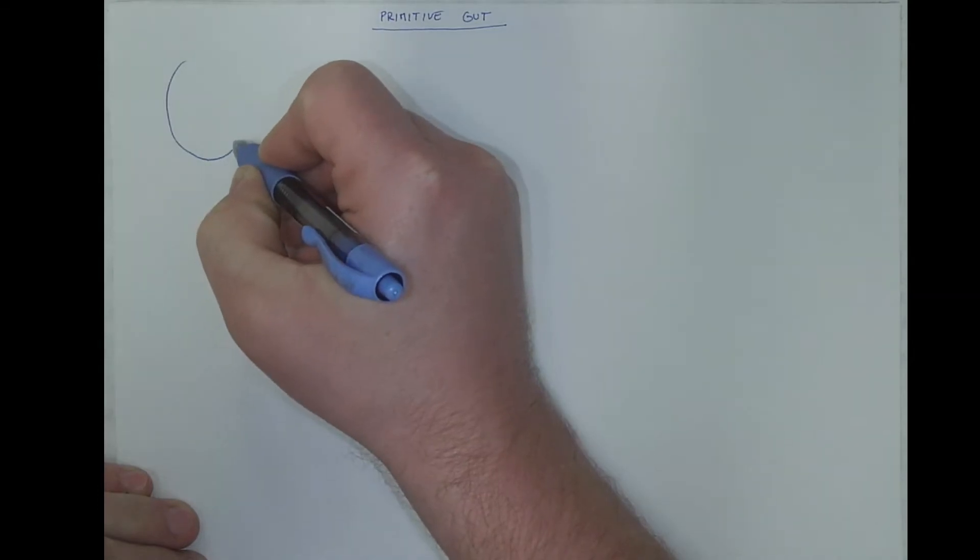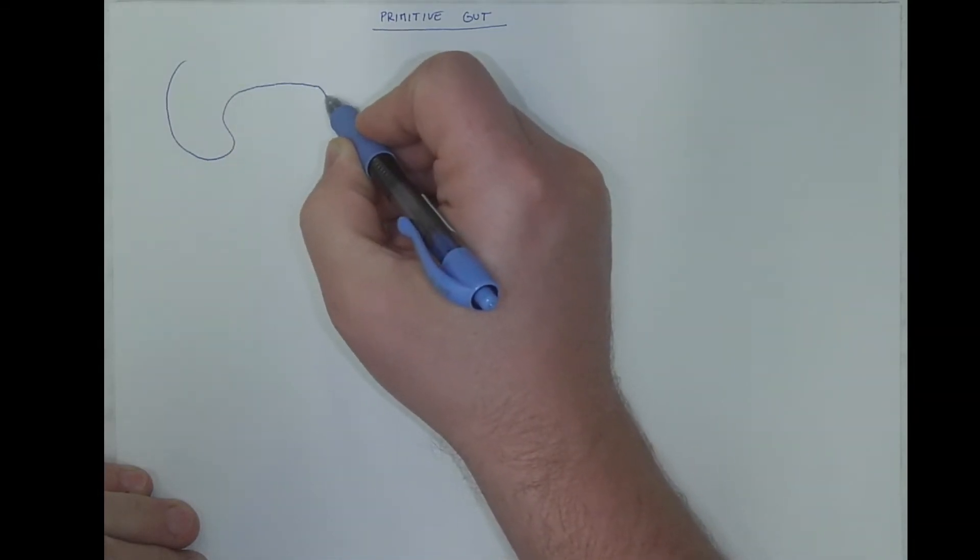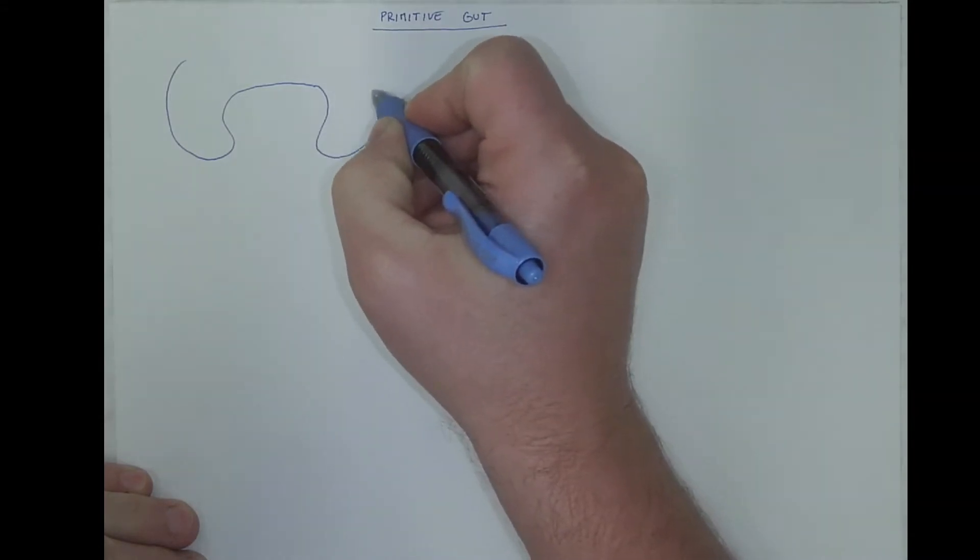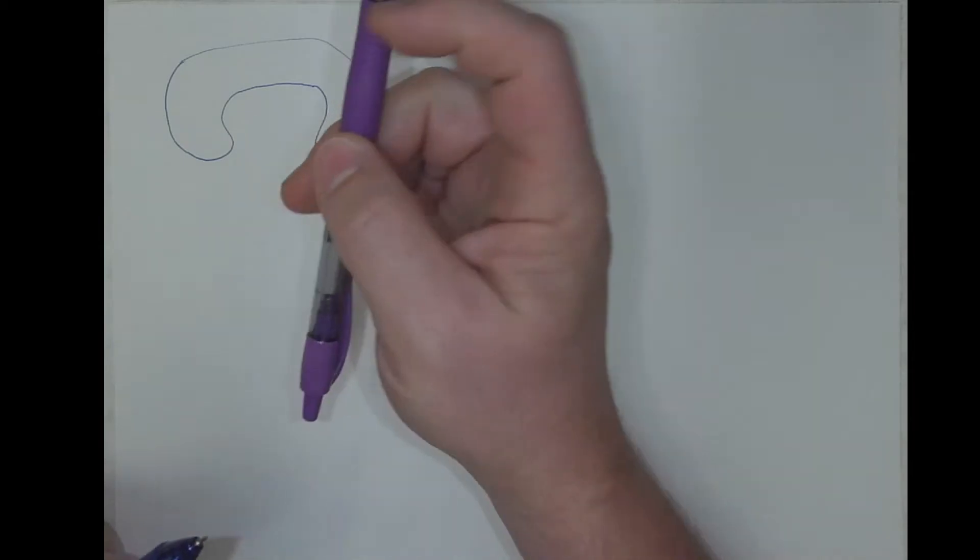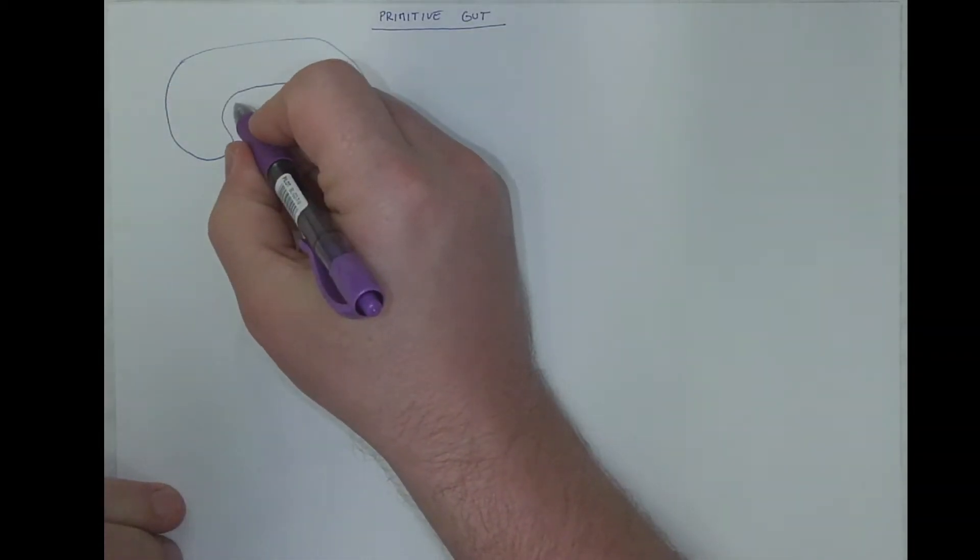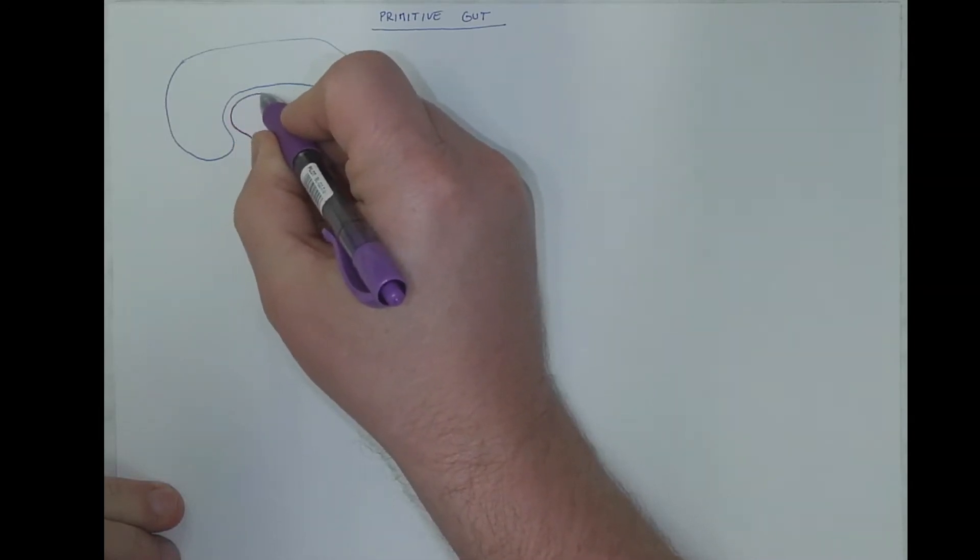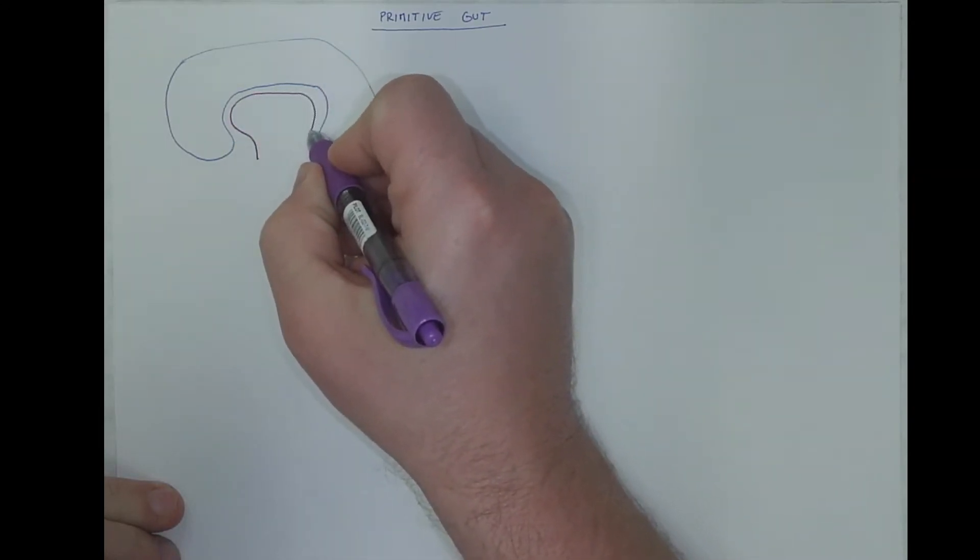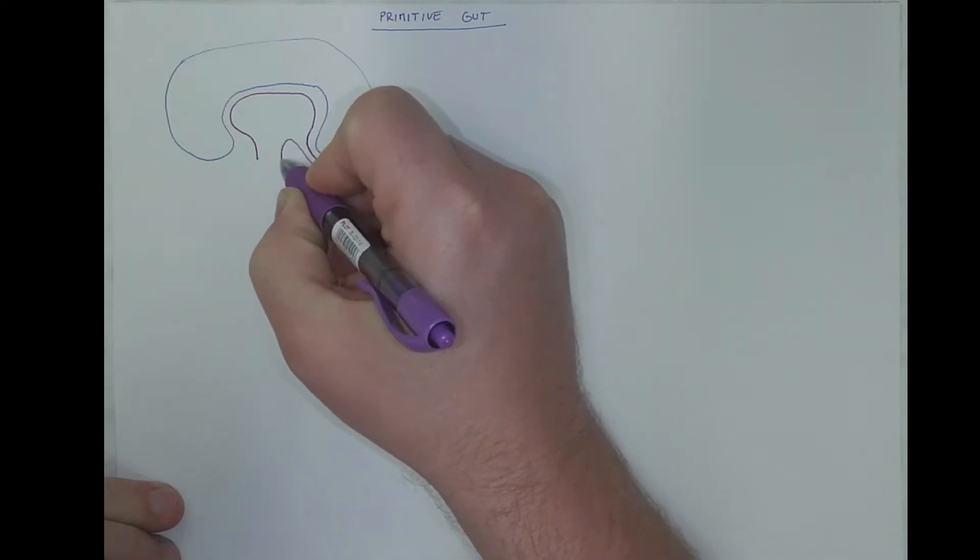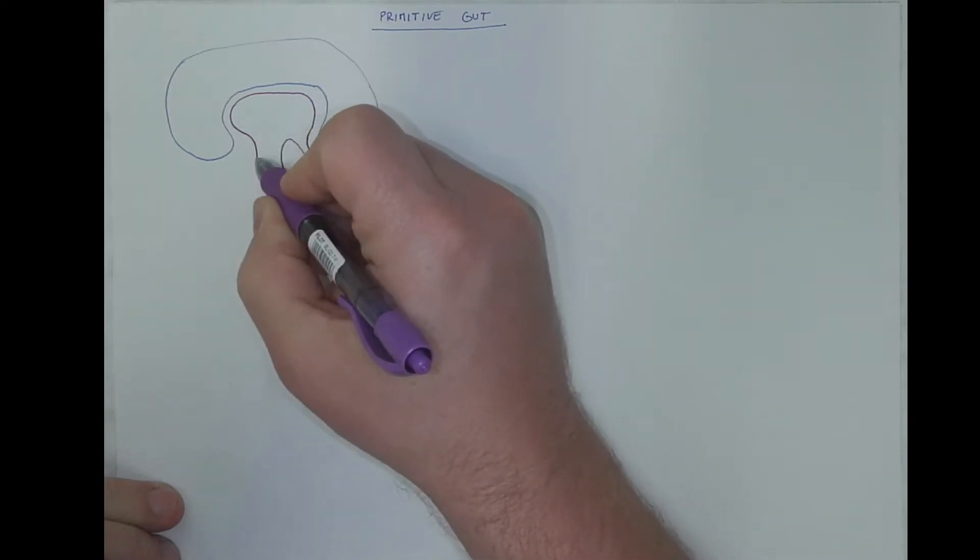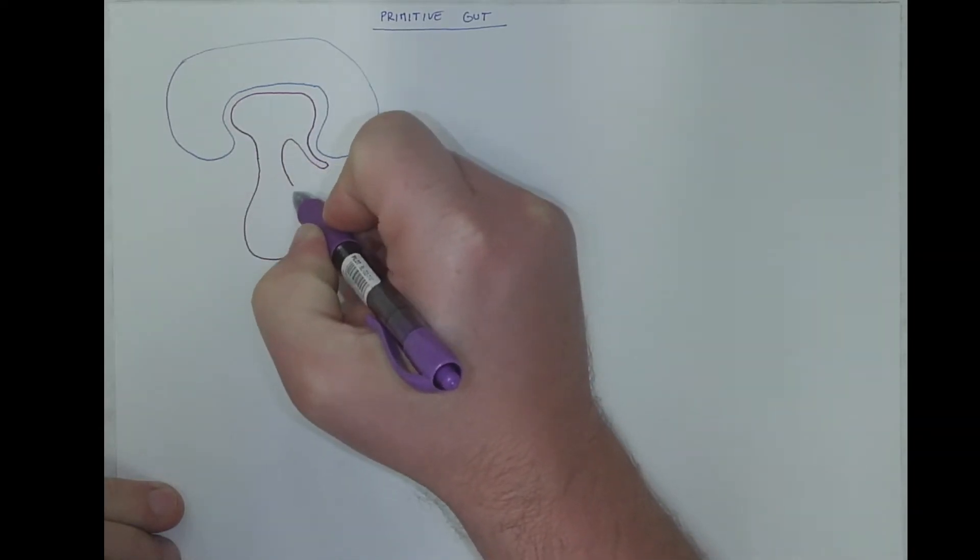We already know that the amniotic vesicle is expanding over the yolk vesicle and this results in a so-called delimitation of the gut from the top part of the yolk vesicle.